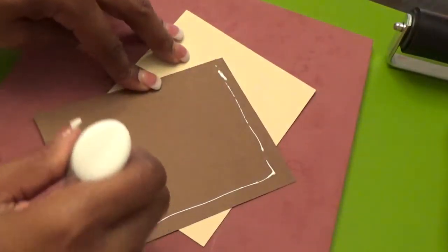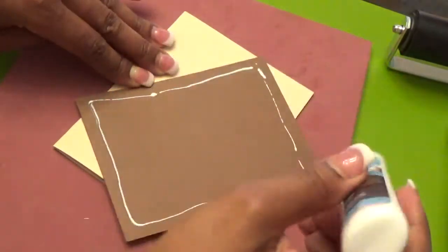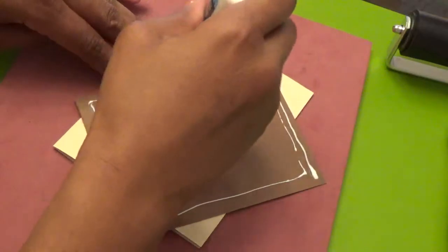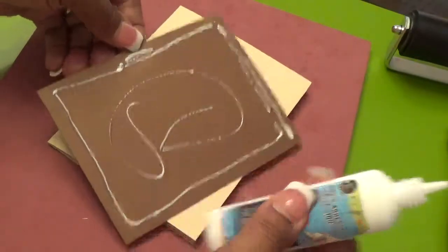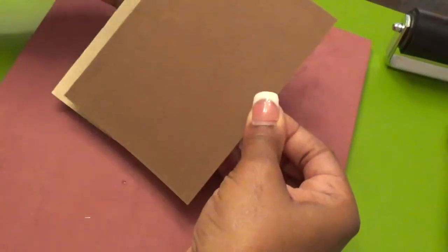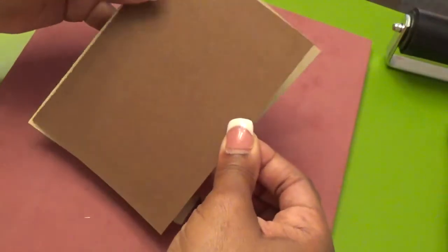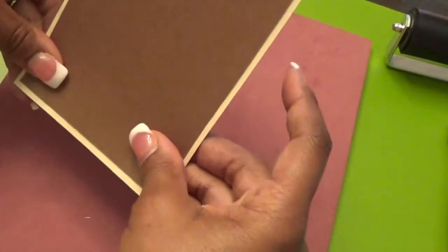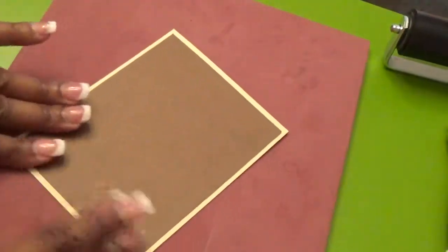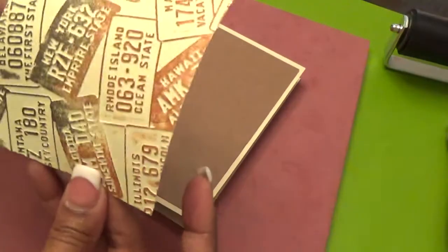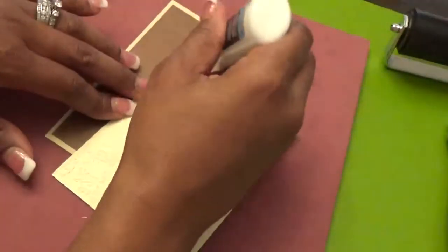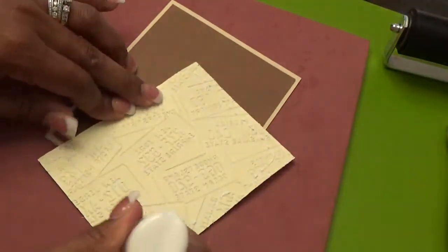I love using wet glue on cards simply because if I need a little wiggle room time, I have it. If I use my ATG, I don't have that time. I'm not looking for perfection, but we are looking to have a nice looking card. So, that's why I love wet glue. Here's our mat. And then we're going to put our centerpiece down.